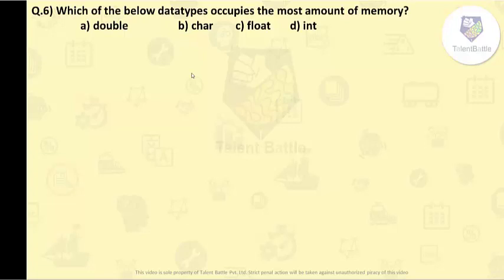Now double requires 8 bytes of memory in C, whereas char requires a single byte. Float requires 4 bytes, and int requires 2 to 4 bytes. So the answer is A, double. It requires the highest amount of memory among the four, that is 8 bytes.